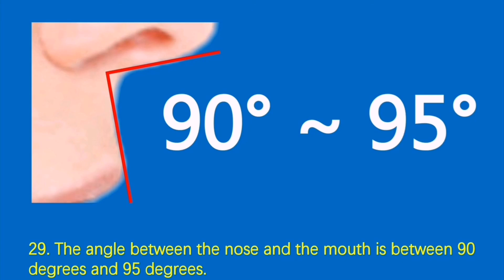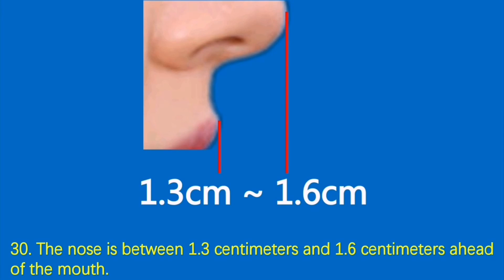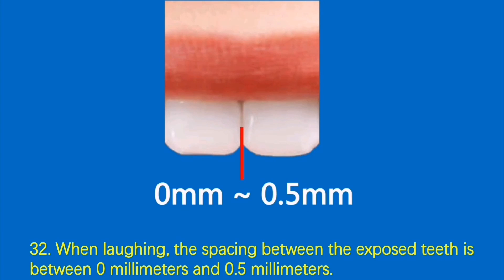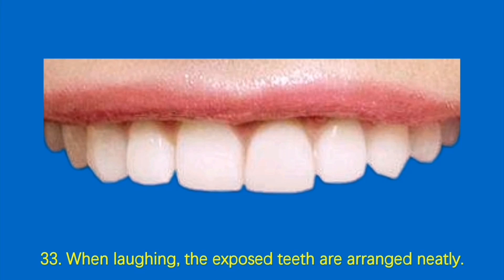Condition 29: The angle between the nose and the mouth is between 90 degrees and 95 degrees. Condition 30: The nose is between 1.3 cm and 1.6 cm ahead of the mouth. Condition 31: When laughing, the exposed part shows no gum above the upper end of the teeth. Condition 32: When laughing, the spacing between the exposed teeth is between 0 mm and 0.5 mm. Condition 33: When laughing, the exposed teeth are arranged neatly.